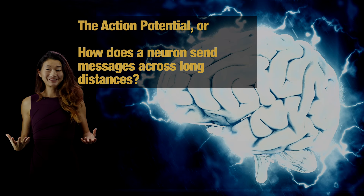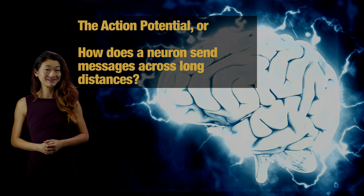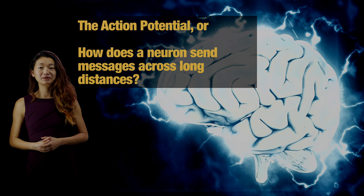Welcome back to another lecture from Introduction to Neuroscience. We have an action-packed sequence today. We're talking about the action potential — the neuron's solution to how to pass messages without fail across really long distances.